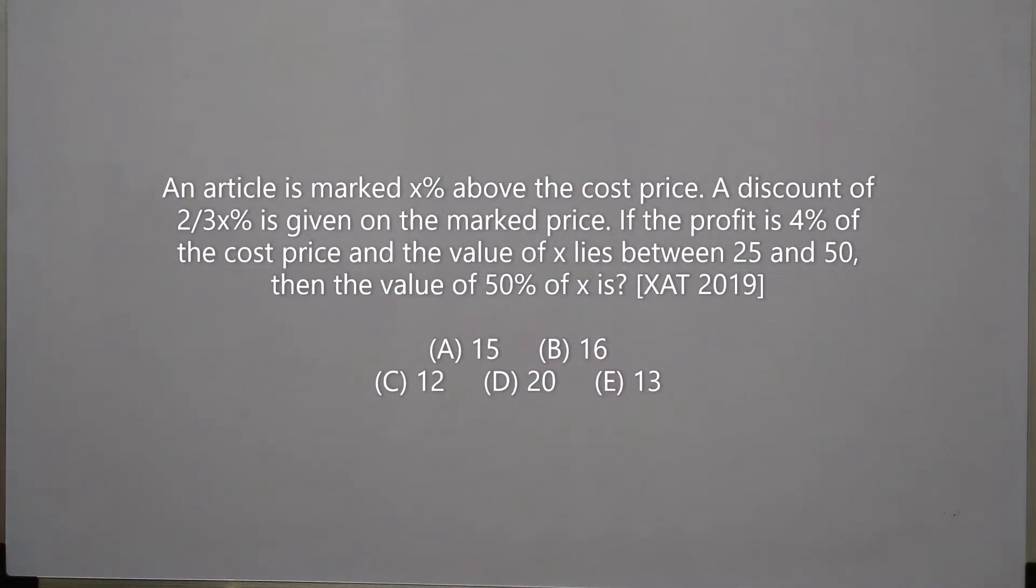An article is marked x% above the cost price. A discount of 2/3 x% is given on the marked price. If the profit is 4% of the cost price and the value of x lies between 25 and 30, then what is the value of 50% of x?